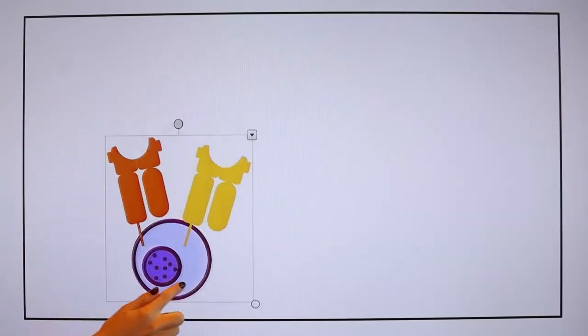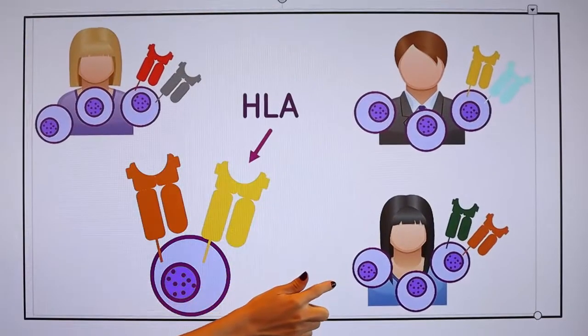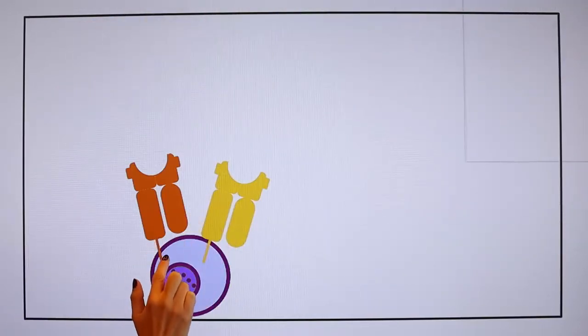Your cells have special proteins on the surface that help defend against foreign cells. These special proteins are called HLA. Everybody has them, but there are thousands of different colors.